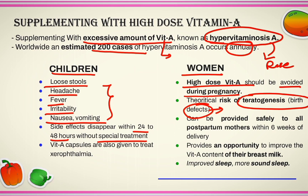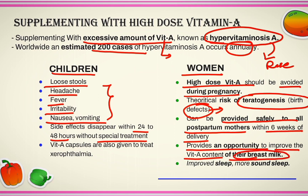However, vitamin A can be safely provided to women in the postpartum period within 6 weeks of delivery. This administration provides an opportunity to improve the vitamin A content of their breast milk, which is then passed to the newborn child and protects against vitamin A deficiency. One beneficial effect found among postpartum ladies is that vitamin A supplementation improves their quality of sleep, giving them more sound sleep during the postpartum period.